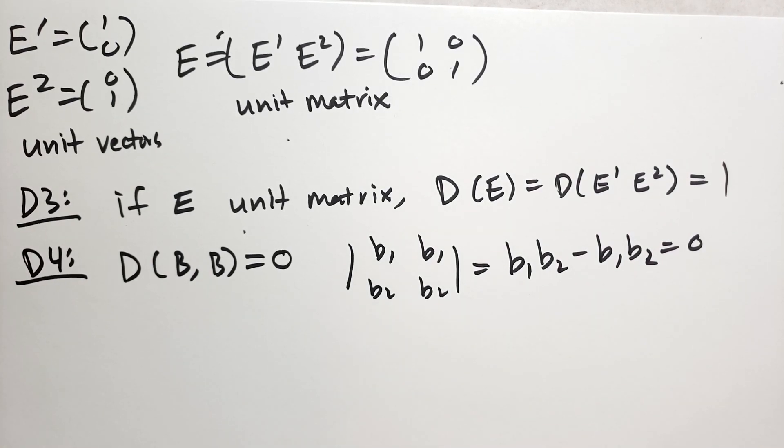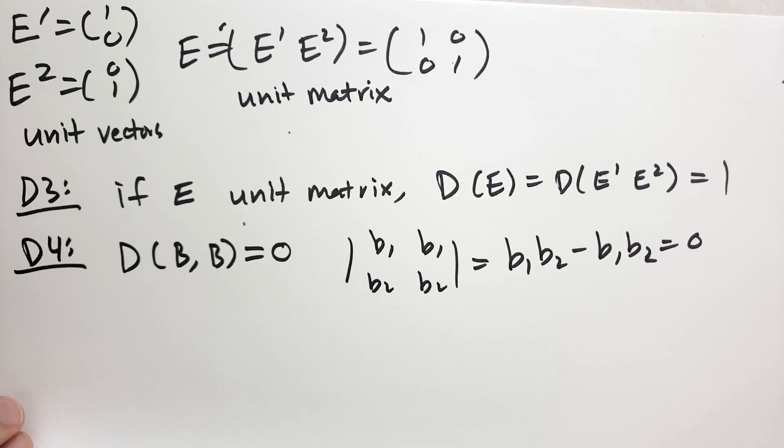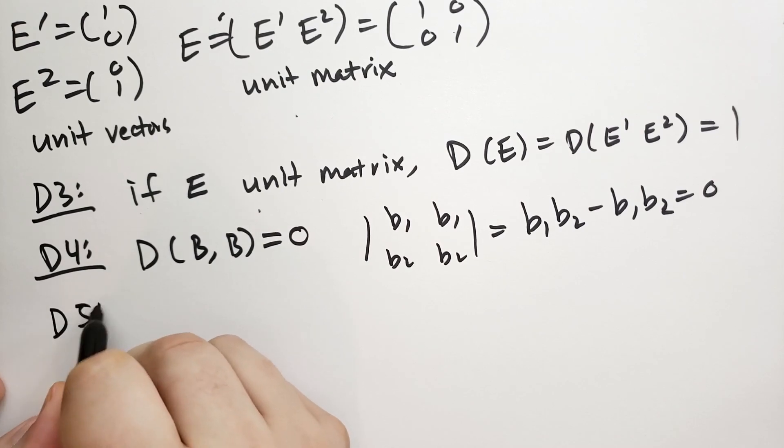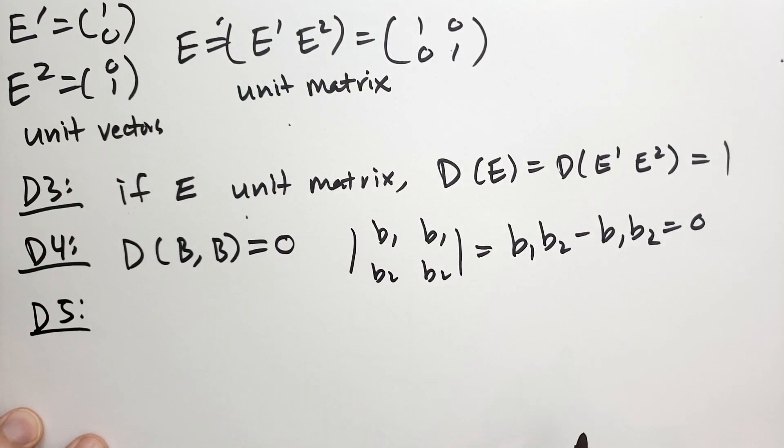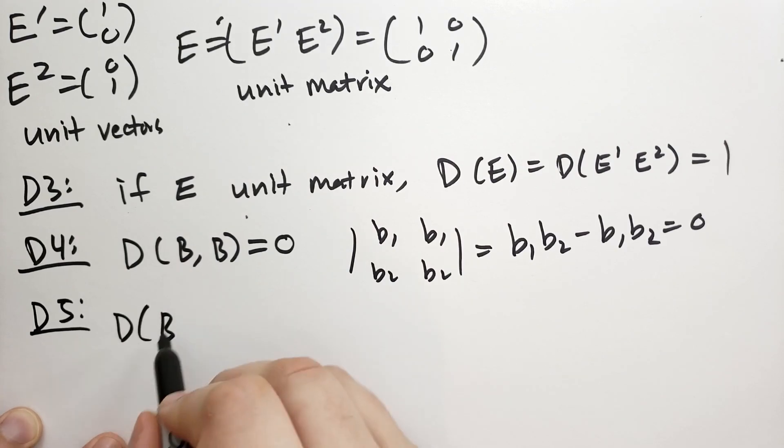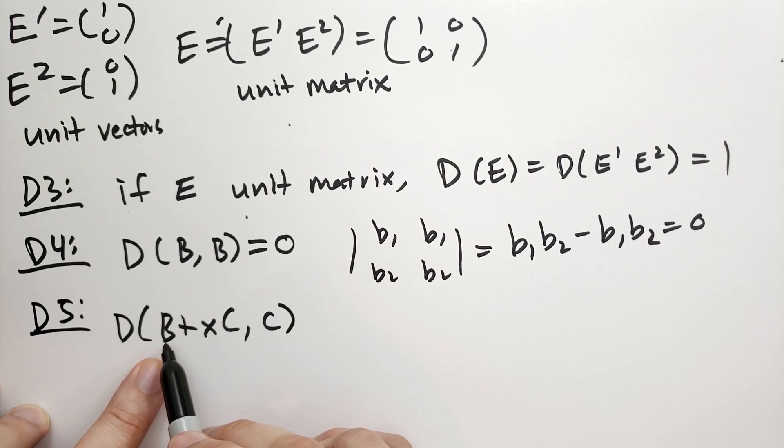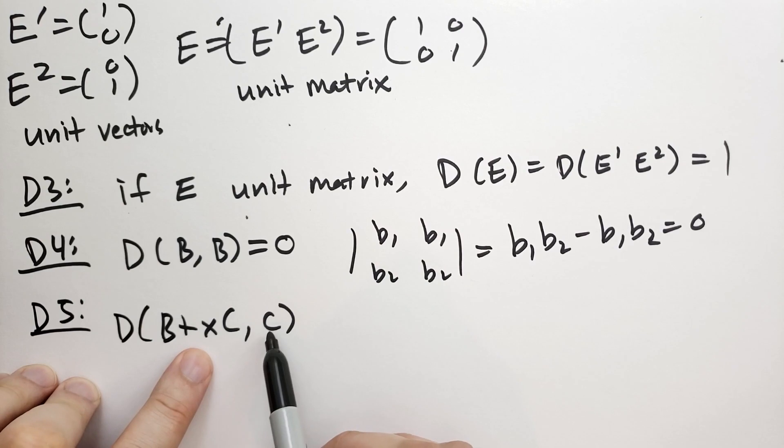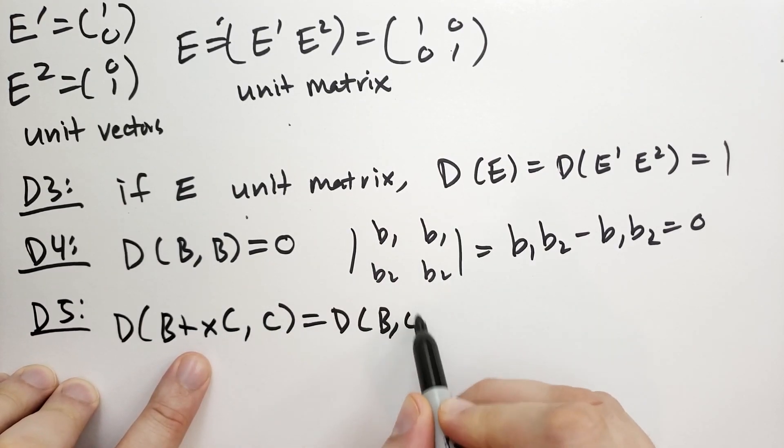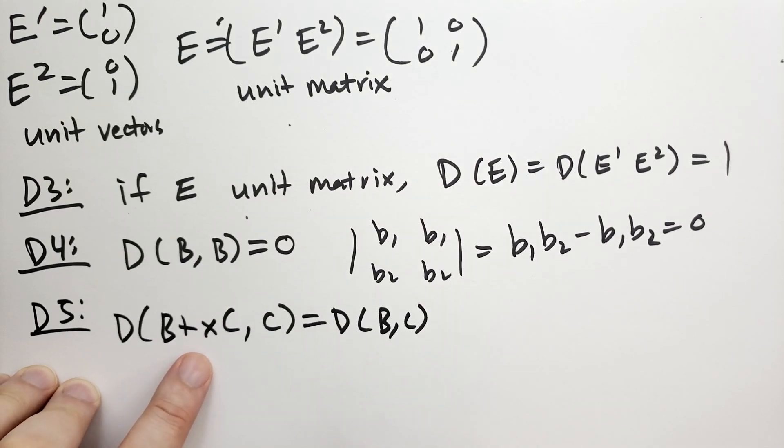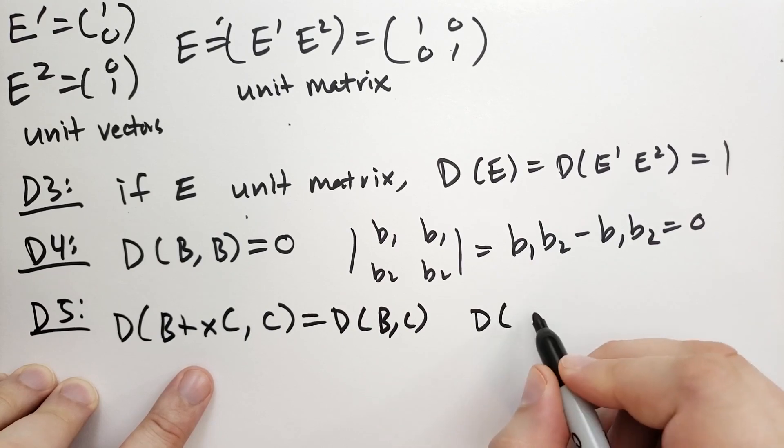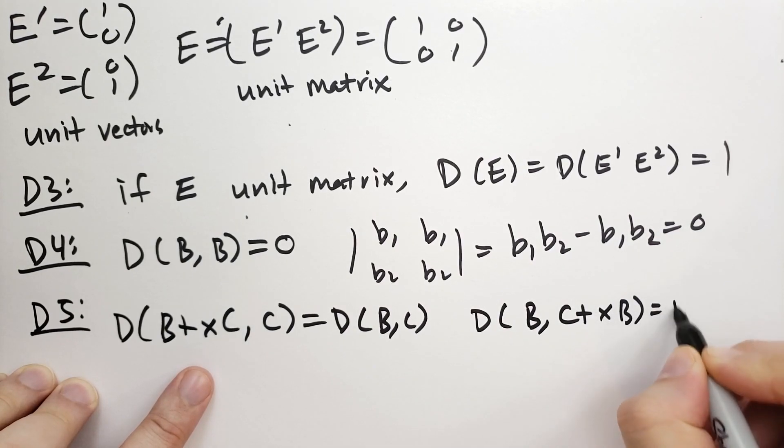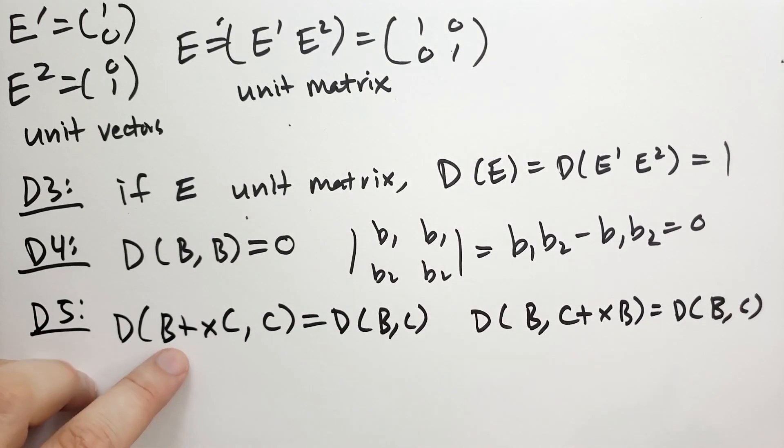So he calls these first four properties the fundamental properties, and then he has some more properties that he wants to share with you. D5 says if we add a multiple of one column to the other, then the value of the determinant does not change. So if we have B plus X times C and C, we're taking the determinant of a column vector times a multiple of the other vector, we're going to just ignore that multiple of that vector. And on the other side as well, we get the same result. So either side doesn't matter.